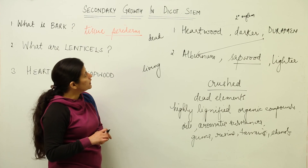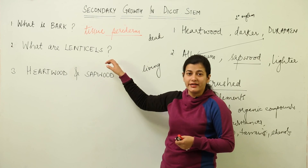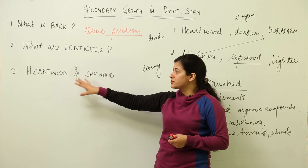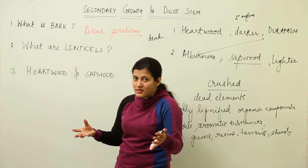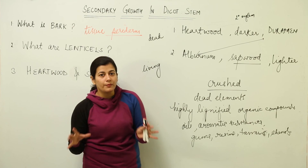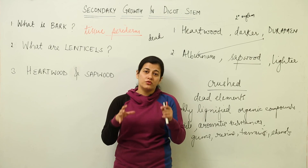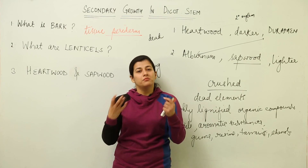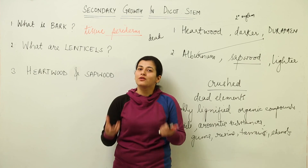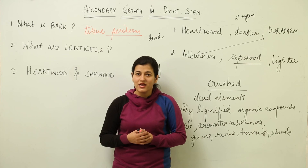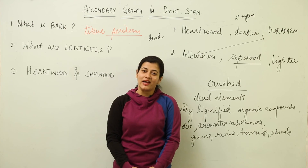This is what you have to learn in secondary growth in a dicot stem — the extra features: presence of bark, lenticels, complementary tissue, and the difference between heartwood and sapwood in secondary xylem. The high durability of heartwood comes from its lignification and organic compounds. Try to see a plant in practicality so you can relate to secondary growth in a better way, and do keep in mind the new terms and steps which have taken place at the physiological level.